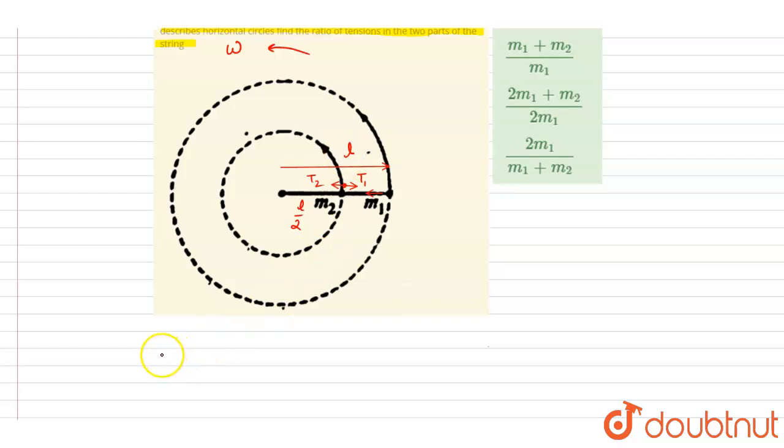If you see the net forces on the two particles, on the m1, the net force toward the center is T1, and this will be the centripetal force that will act on m1. That is toward the center, so I will write down T1 equals m1 omega squared l.